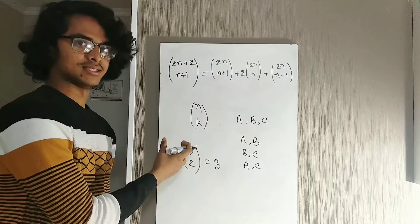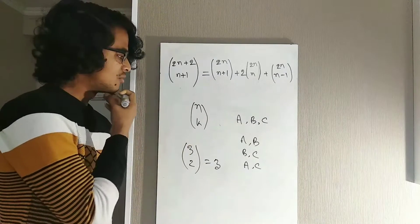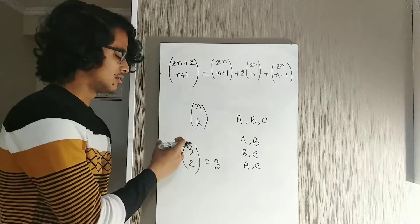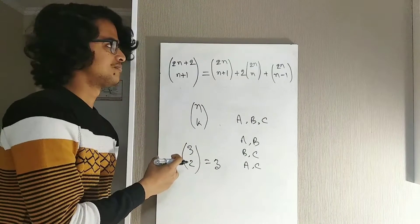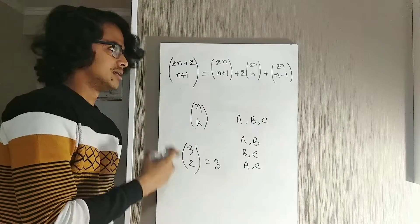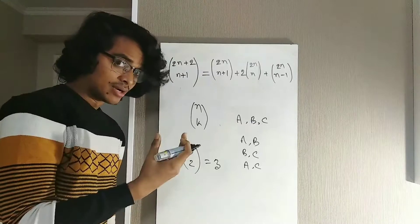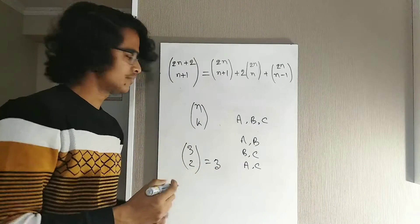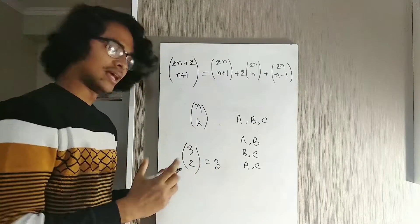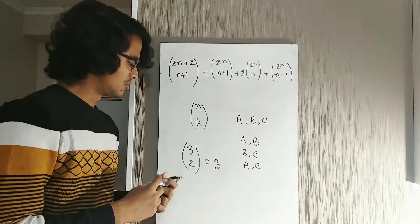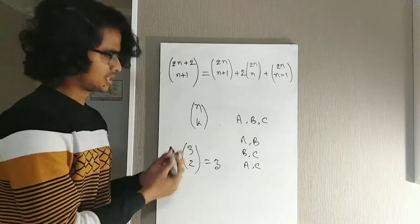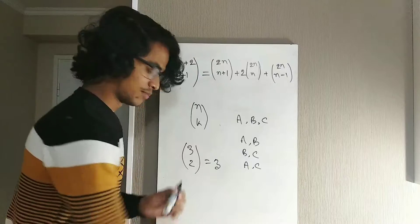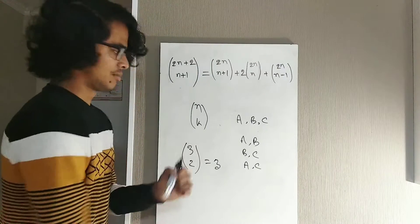If you want to understand it in a deeper way, I recommend you first gather some knowledge in combinatorics, particularly in combinations and permutations, and then come back to this video. If you don't understand this notation properly, you'll have a hard time understanding this problem and the proof later on.